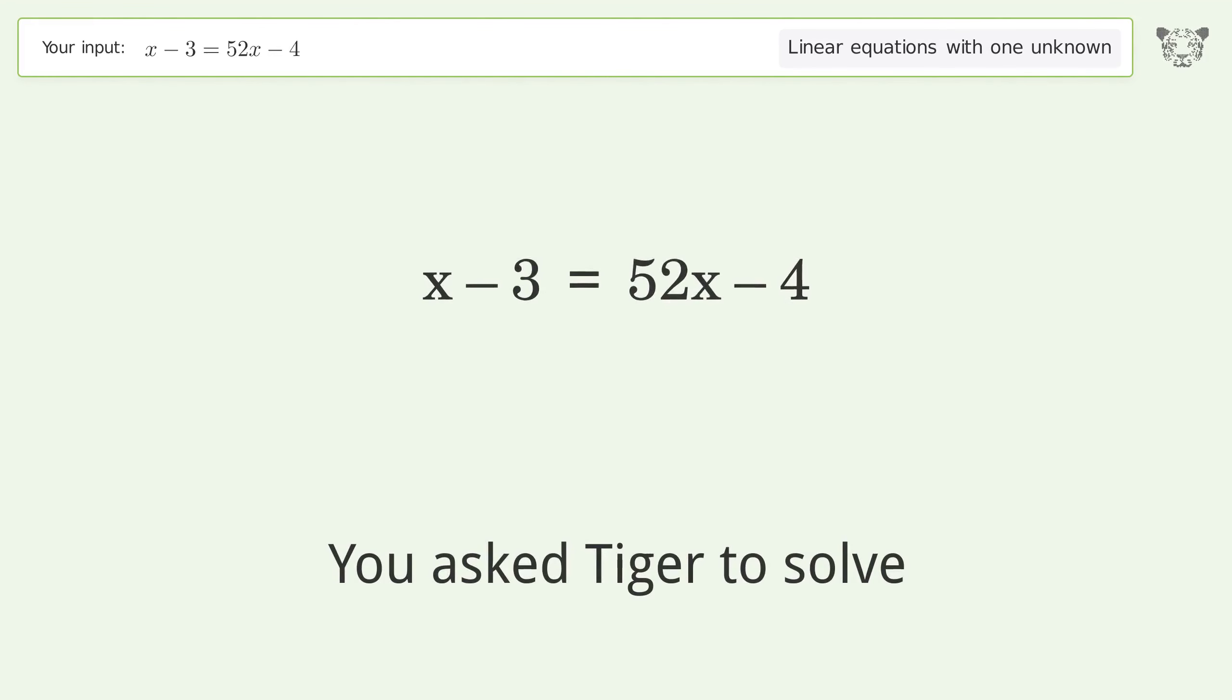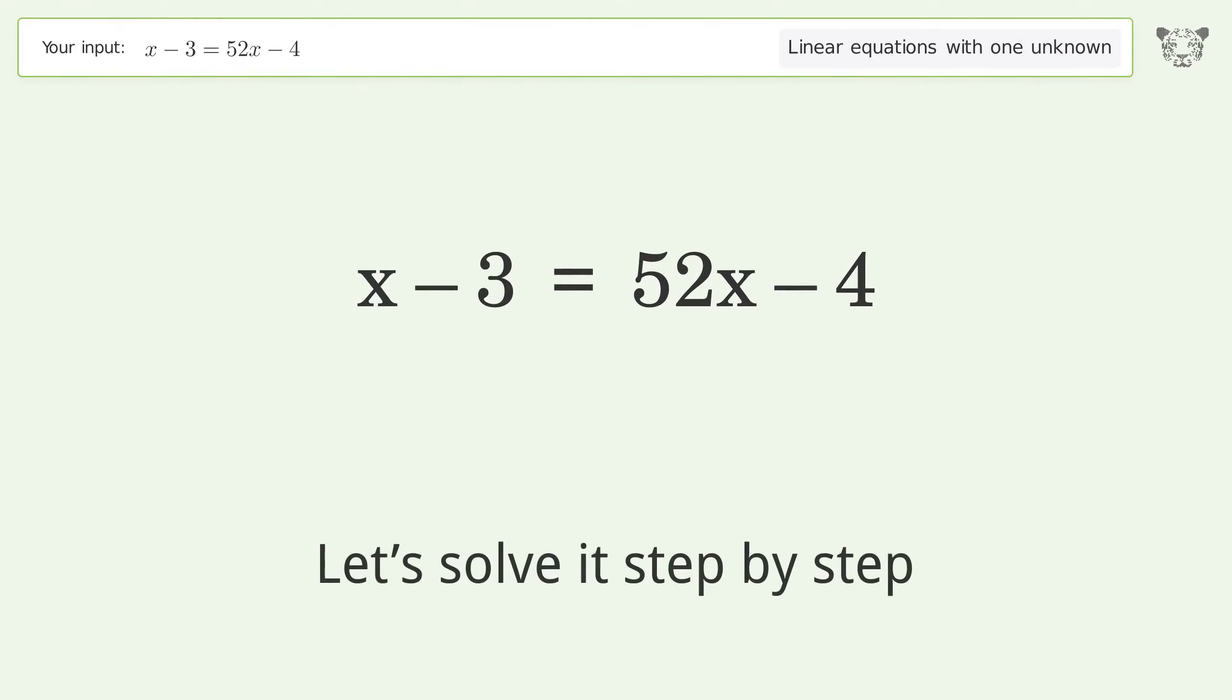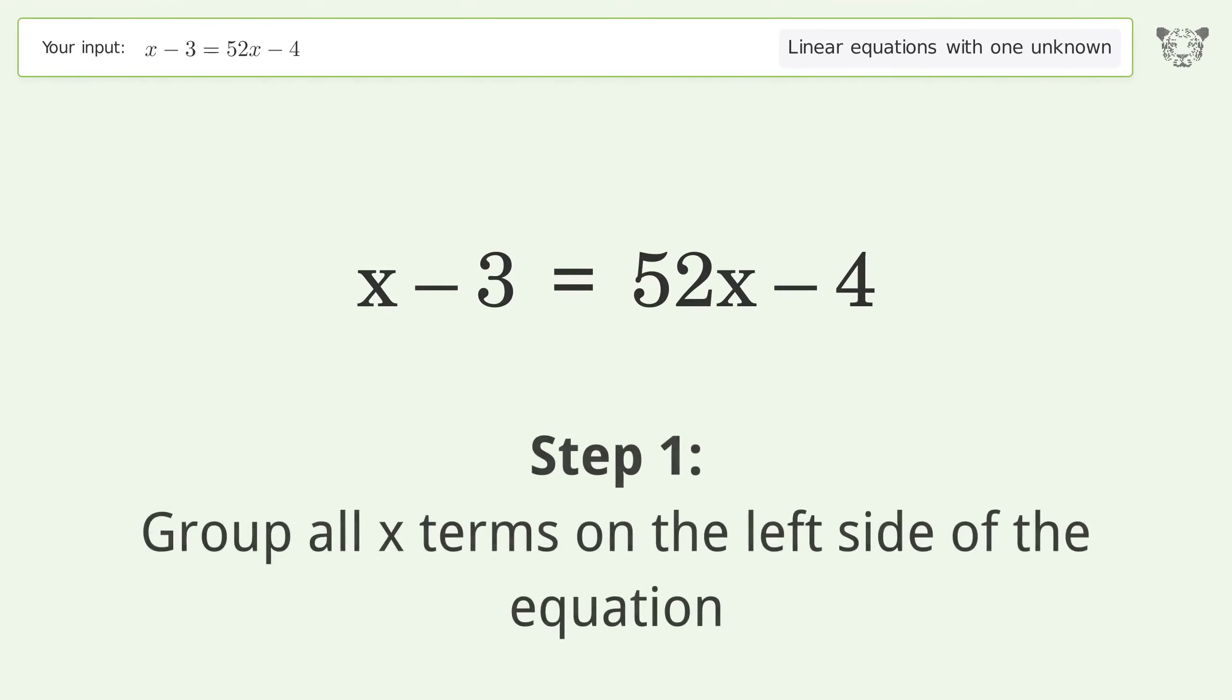You asked Tiger to solve this. This deals with linear equations with one unknown. The final result is x equals 1 over 51. Let's solve it step by step. Group all x terms on the left side of the equation.